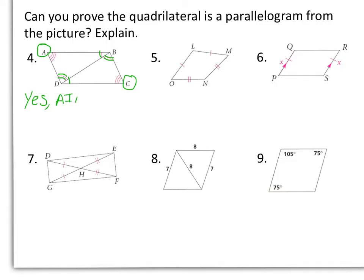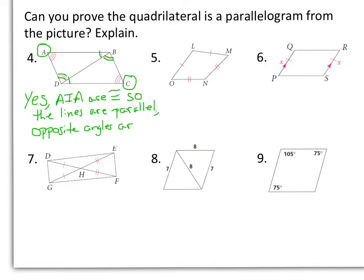We know that alternate interior angles are congruent, which tells me that I have parallel lines, and also opposite angles are congruent. In number 5, we have consecutive sides congruent, not opposite sides congruent. So number 5 is a no, because opposite sides are not congruent.